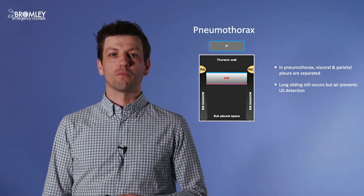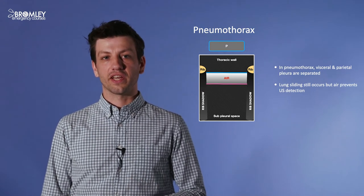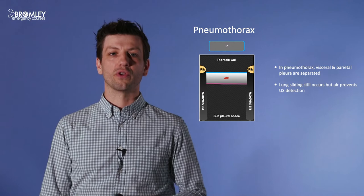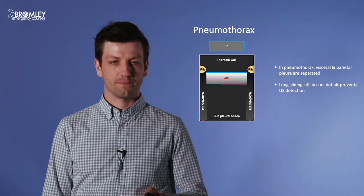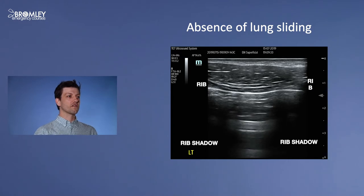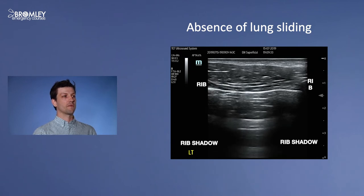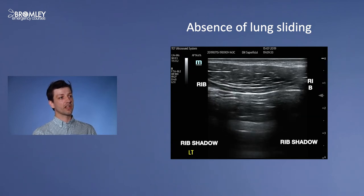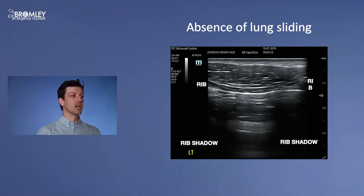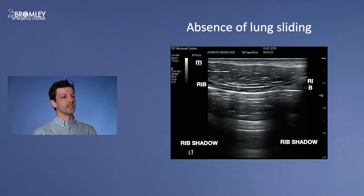Here is a schematic demonstrating pneumothorax — air between the two pleural lines. Because the pleural lines are separated by air, we do not see lung sliding even though the lung is still inflating and deflating. In the video here, there is no lung sliding. We see normal artefacts — comet tails, A lines, rib shadows — but no sliding of the pleural line. Comparing that to normal, the next video shows a very clear difference with visible lung sliding.